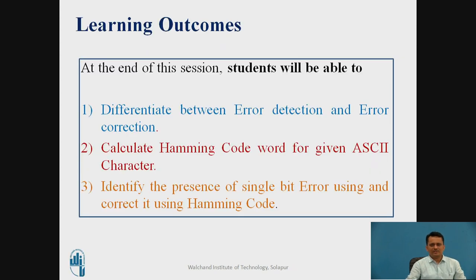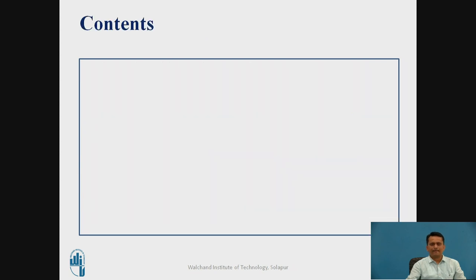The learning outcomes of this session are: students will be able to differentiate between error detection and correction techniques, generate Hamming code for a given ASCII character, and identify where a single-bit error is present in the data and correct it using Hamming code.